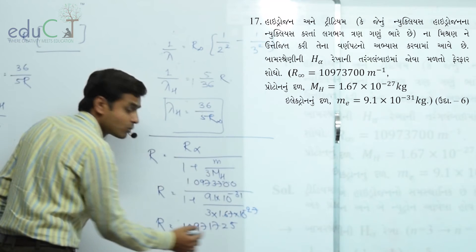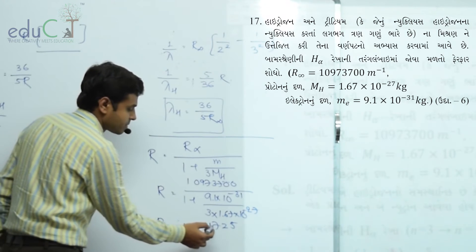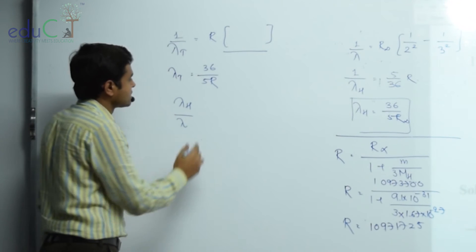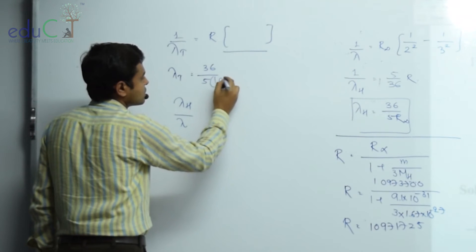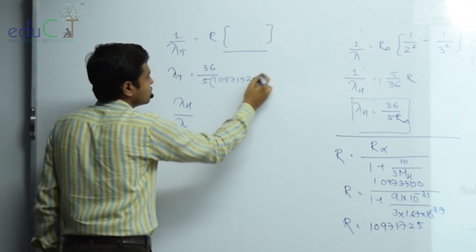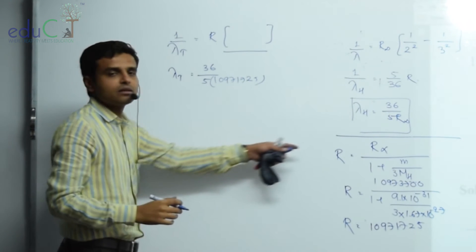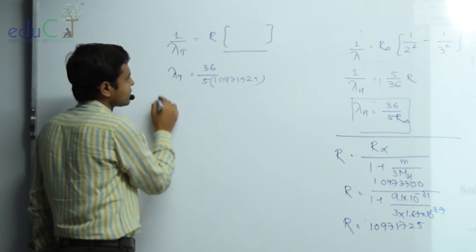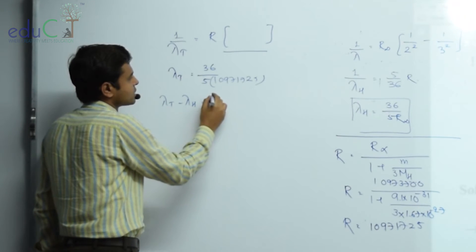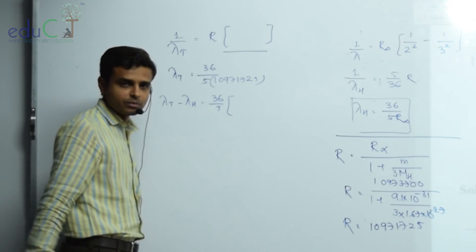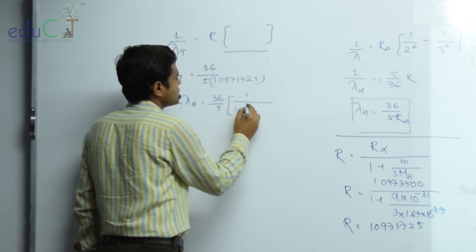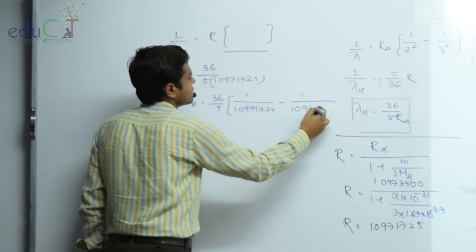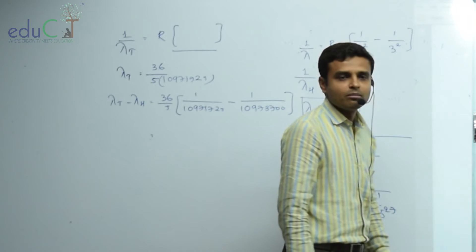R equals approximately 2.5 — 10 to the minus 30. Then lambda T minus lambda H: 1 upon 10,971,725 minus 1 upon 10,973,700, giving approximately 2.3 angstrom.